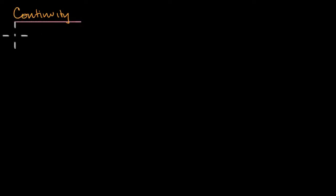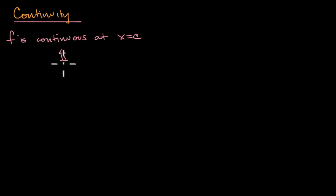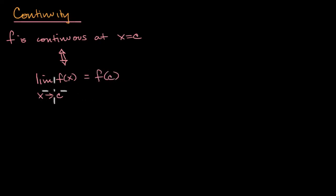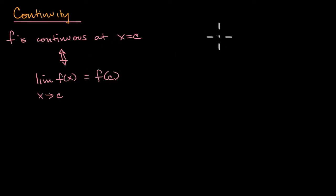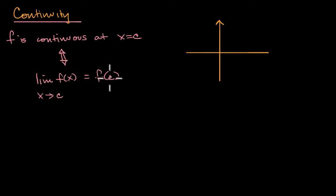So the formal definition of continuity — we'll start with continuity at a point. We could say the function f is continuous at x = c if and only if the two-sided limit of f(x) as x approaches c is equal to f(c). This is saying: if the limit as we approach c from the left and the right of f(x) is actually the value of our function there, then we are continuous at that point. Let's look at three examples.